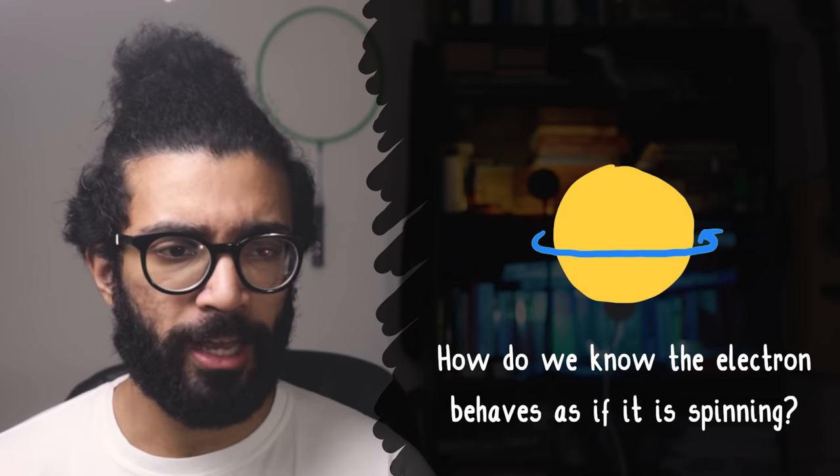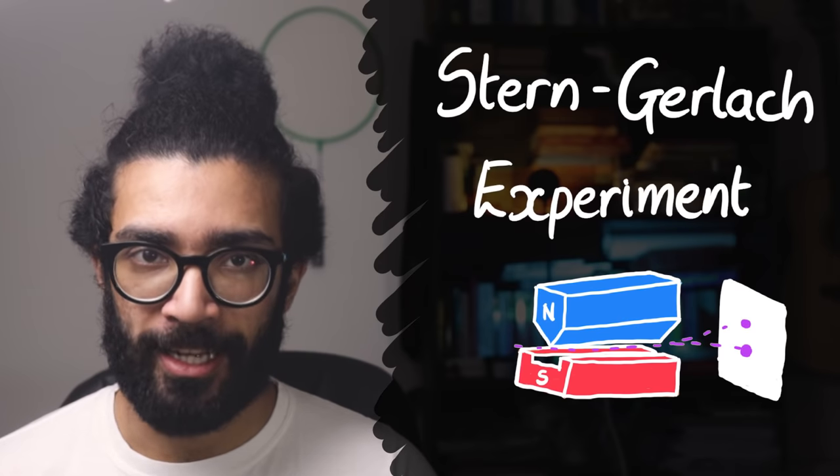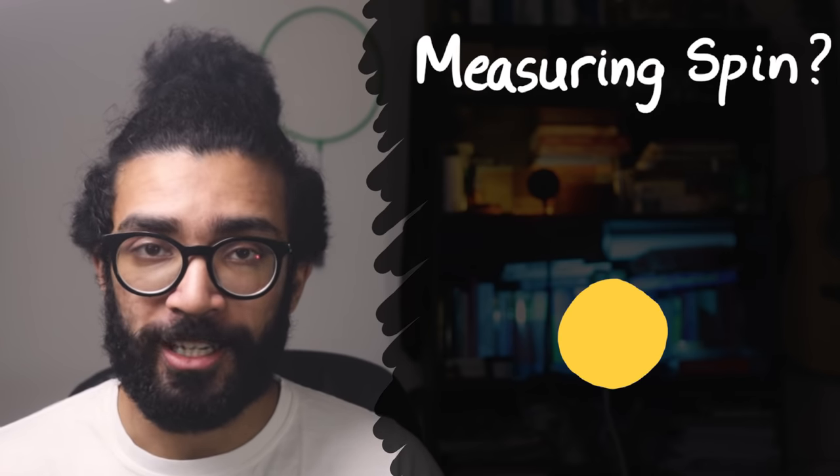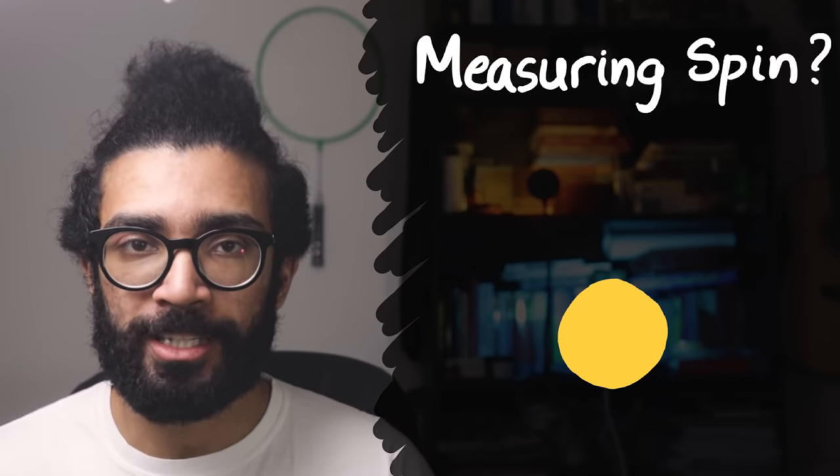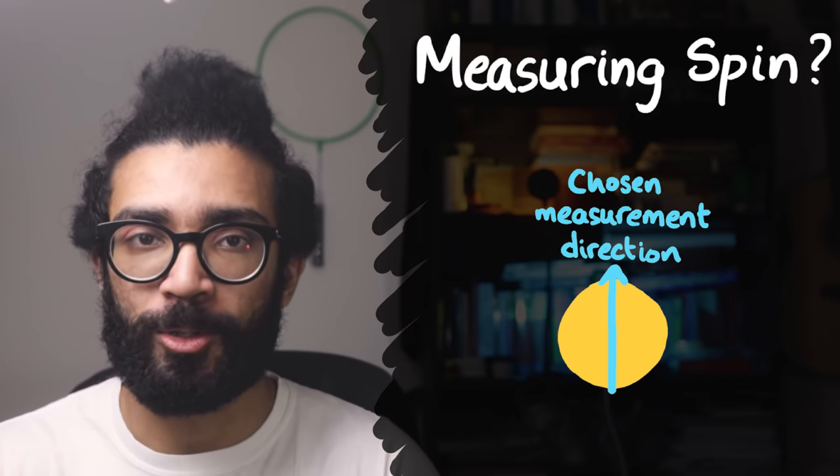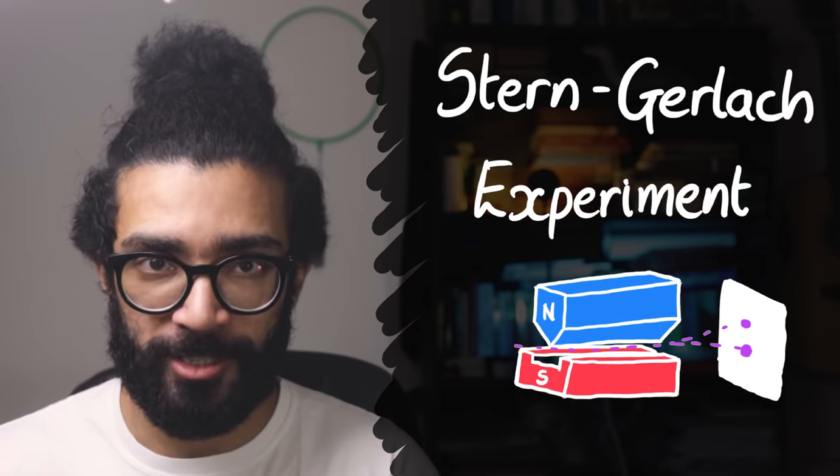By the way, if you want to figure out how we can tell that these electrons behave as if they're spinning without them actually spinning or rotating, check out something known as the Stern-Gerlach experiment. Now, what does it really mean for us to measure the spin of an electron? Well, in rather abstract terms, the first thing that we have to do is to choose the direction in which we want to measure the spin. Again, for more practical details, check out the Stern-Gerlach experiment. It's really interesting.